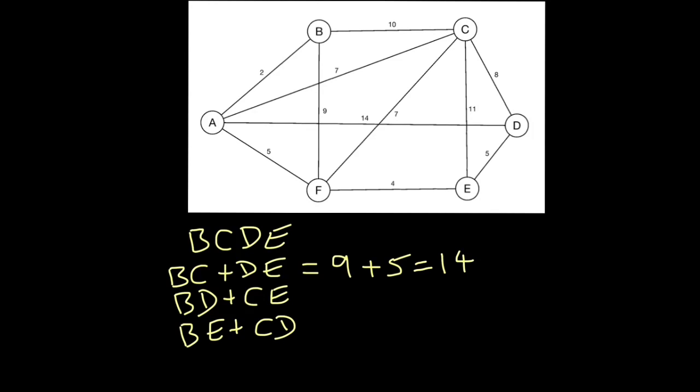To go from B to D, all sorts of different ways we could get there, such as 10 plus 8 is 18, or 9 plus 4 plus 5 is 18, but actually the best way of doing it, or rather the shortest way of doing it, would be either to go 2 plus 5 is 7 plus 4 is 11 plus 5 is 16,